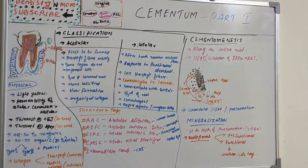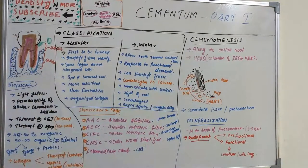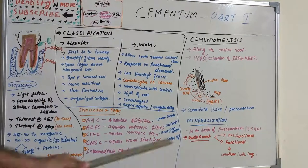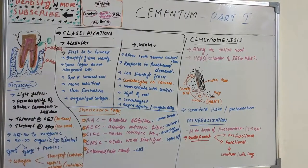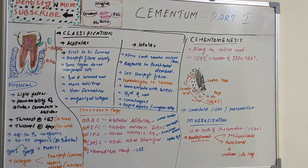To summarize the first part: we covered basic features, physical characteristics, the two main types (acellular and cellular) and their differences, the Schroeder five-type classification, and cementogenesis — including Hertwig's epithelial root sheath, pre-cementum or cementoid tissue, and the two stages of mineralization. The next part will cover the cells — mainly cementoblasts and cementocytes — the cemento-enamel junction, and the basic functions of cementum.